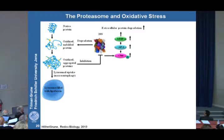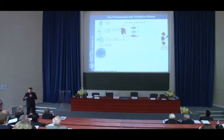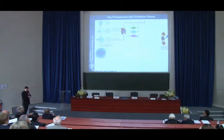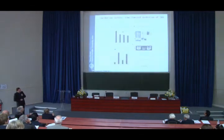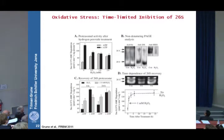Just before I come to the data, I want to remind you of data Kelvin showed from our joint work: part of the stress response of the proteasome is that the 26S proteasome falls apart, so you have lower ubiquitin-degrading activity in the cell. The 26S proteasome activity goes down, with some increase in 20S proteasome activity, and this response occurs within hours.